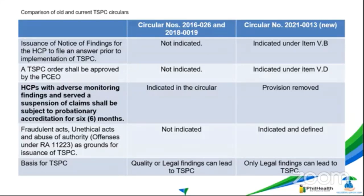The offenses — fraudulent acts, unethical acts, and abuse of authority — are in the UHC law. They were not in the old circular; we just aligned the offenses to the circular, essentially updating them. And lastly, in the old circular, TSPC could be applied for both quality or legal findings. Quality meaning non-fraud issues — for example, inappropriate drugs, inappropriate lab, or use of non-PNF. In the new circular, quality findings are no longer covered by TSPC; only legal findings can trigger TSPC.